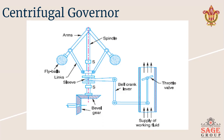In order to limit the travel of the sleeve in the upward or downward direction, stoppers are also provided, denoted by capital S. When the load on the engine increases, the engine and the governor speed decreases. This results in a decrease of centrifugal force on the balls; hence the balls move inward and the sleeve moves downward. The downward movement of the sleeve operates a throttle valve at the other end, and this throttle valve is operated with the help of a bell crank lever to increase the supply of working fluid, thus the engine speed is increased.